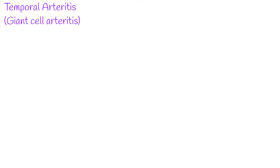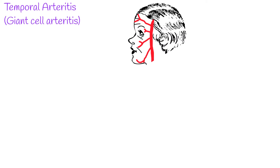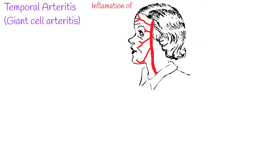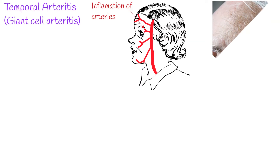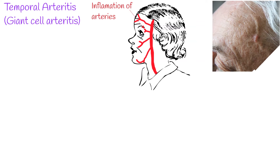Temporal Arteritis, also known as Giant Cell Arteritis, is the most common form of vascular inflammation. It most commonly occurs among women, especially the elderly over the age of 50.